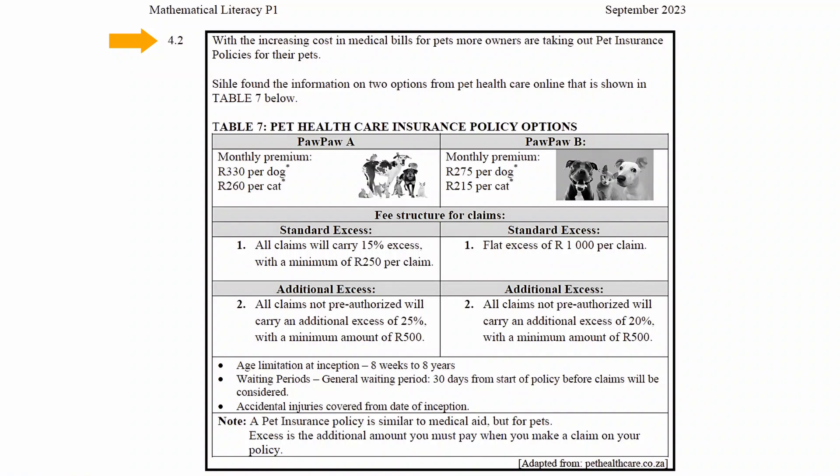Question 4.2 states that with increasing costs in medical bills for pets, more owners are taking out pet insurance policies for their pets. Sikre found information on two options for pet healthcare online shown in table 7. Option 1 is Paw Paw A with a monthly premium of 330 rand per dog and 260 rand per cat, while option 2 is Paw Paw B with a monthly premium of 275 rand per dog and 215 rand per cat.